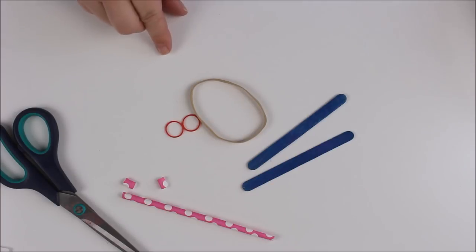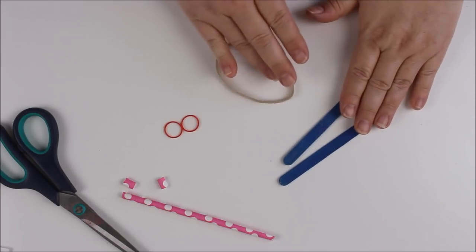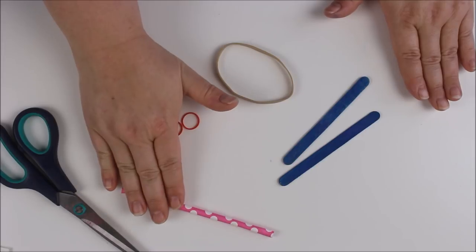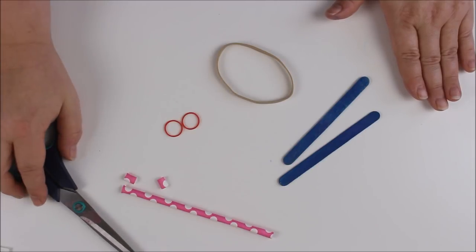They're really simple to make and all you need are lolly sticks, a large elastic band, two smaller elastic bands, paper straw or cardboard and some scissors to cut the paper straw.